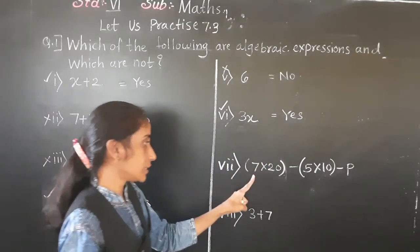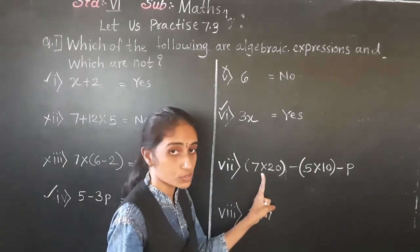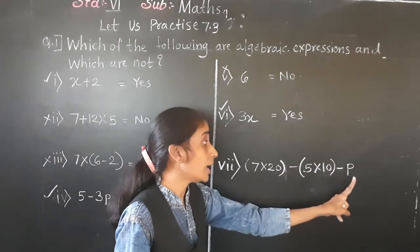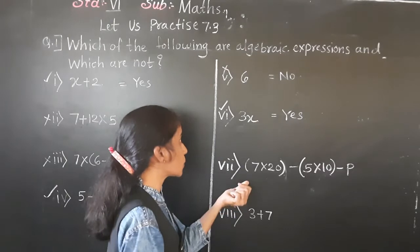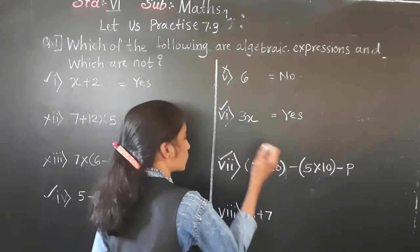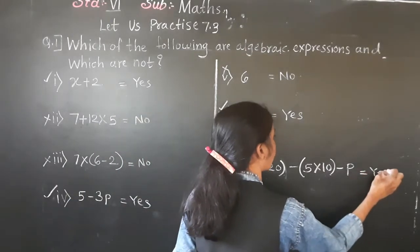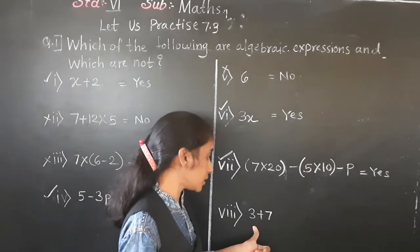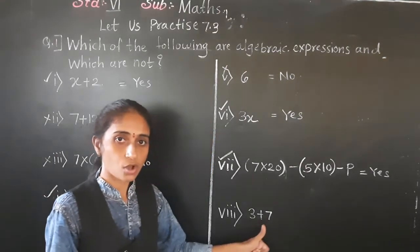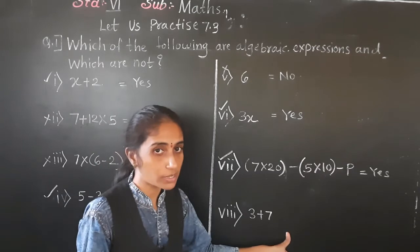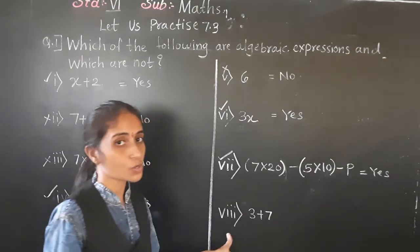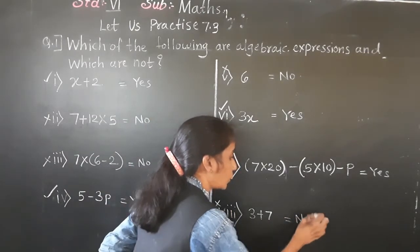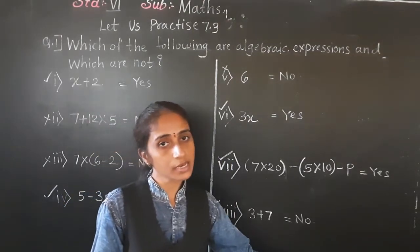The seventh example has numbers, constants, multiplication, subtraction, and a variable — so it is also an algebraic expression. The eighth example has basic operations and constants but no variable, so it is not an algebraic expression.